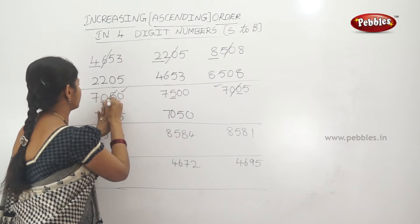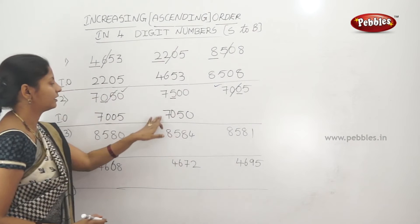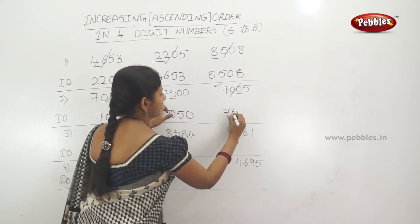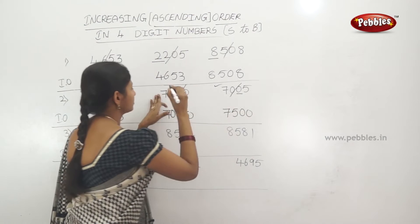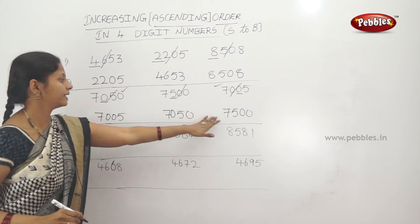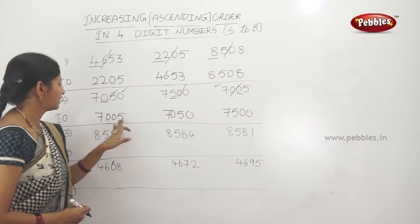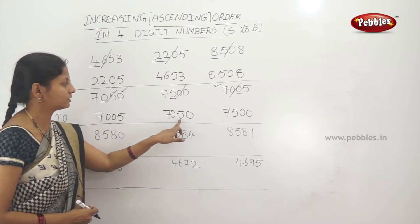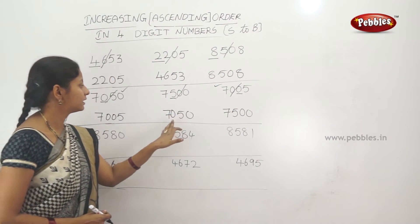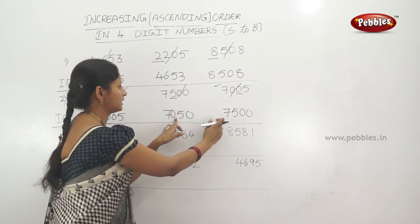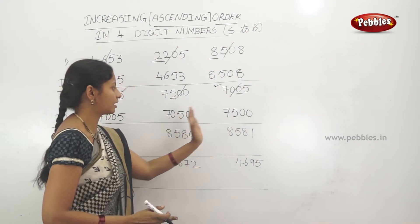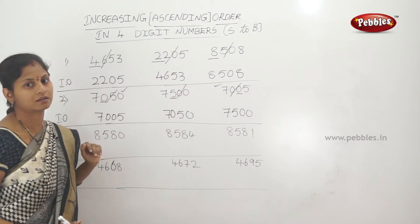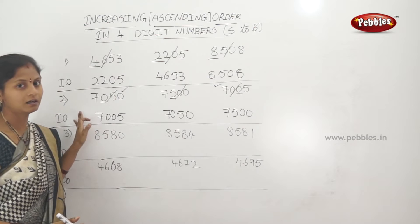So the order from smallest to biggest is: 7,005 — 7,050 — 7,500. This is the increasing order and ascending order for these numbers.